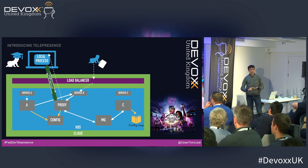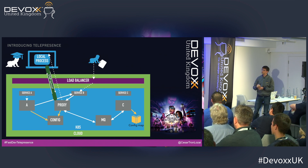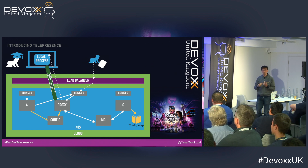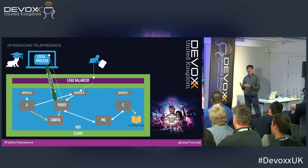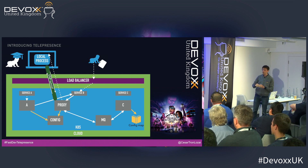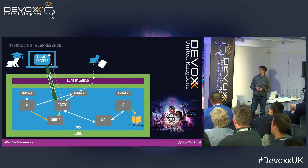All the environment variables, config maps, secrets — everything you can imagine — are transferred into your local process. You really get the best of both worlds: you're only running one process on your machine, and yet you get all the benefits of being in the cloud with as many services as you want available. I think the best way to show this is with a demo.